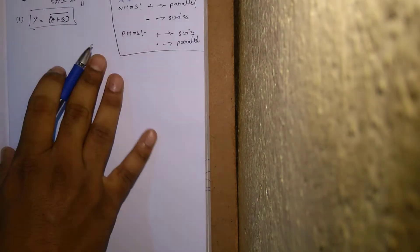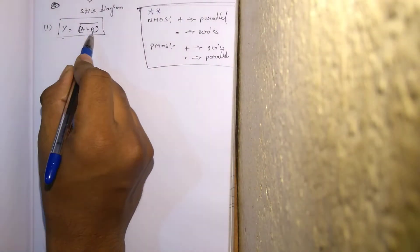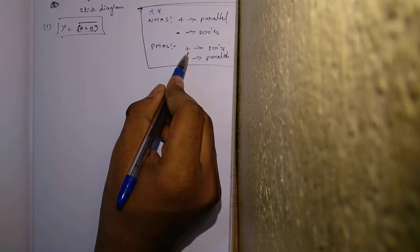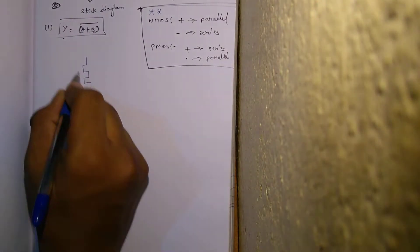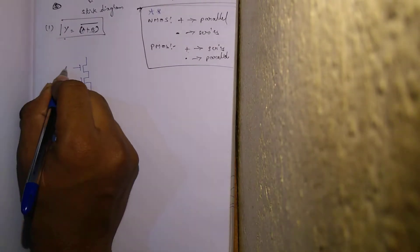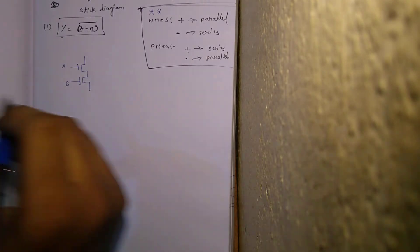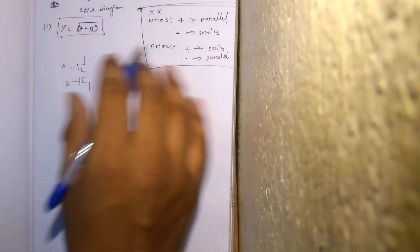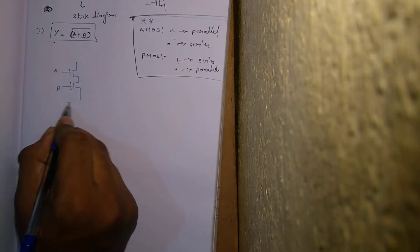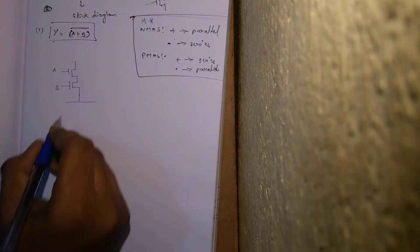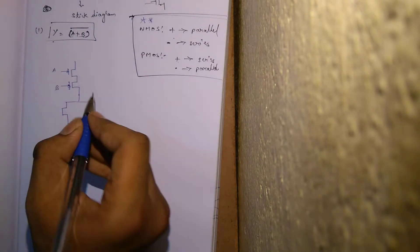The pull-up network consists of PMOS circuits. The expression is A plus B. Plus in PMOS means series, so the A transistor and B transistor are going to be in series — this is A and this is B. The pull-down network will have all NMOS transistors. In NMOS, plus means parallel, so in the pull-down network the A transistor and B transistor are in parallel. PMOS will have a bubble symbol, whereas NMOS transistor does not.